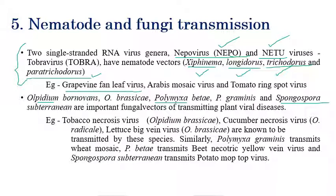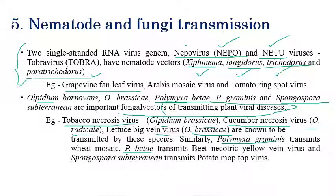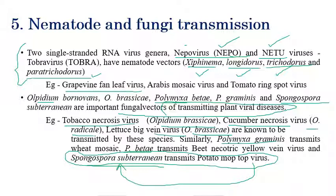Some species of fungi — Olpidium, Polymyxa, and Spongospora — also act as vectors in transmitting plant viral diseases. Tobacco necrosis virus is transmitted by Olpidium brassicae, cucumber necrosis virus by Olpidium radicale. Polymyxa graminis transmits wheat mosaic virus, Polymyxa betae transmits beet necrotic yellowing virus, and Spongospora subterranea — an important one — transmits potato moptop virus. This concludes the topic of transmission of plant viruses.